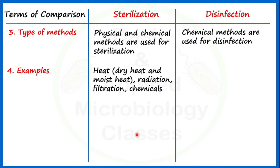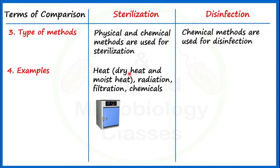Let's see some pictures related to sterilization methods. This is a picture of a hot air oven, which is used to carry out dry heat sterilization. This picture is of an autoclave, which is used to carry out moist heat-based sterilization.